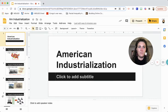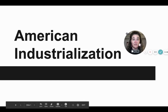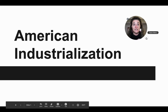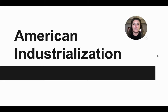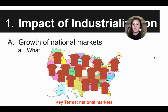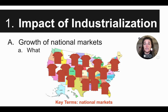Today we are going to talk about American industrialization. Last week we did a little bit of work looking into some definitions of what industrialization is. Now we're going to look at how it actually impacted the United States and business here in the U.S. So first of all, the impact of industrialization — one of the first things we see is the growth of national markets.